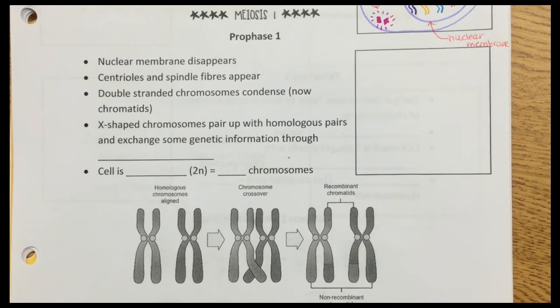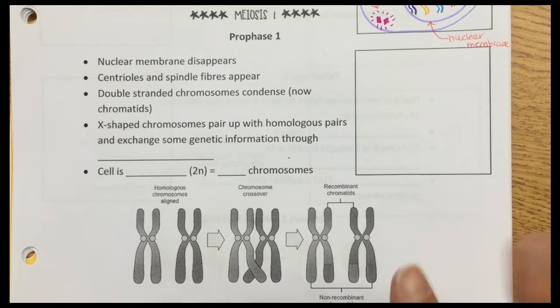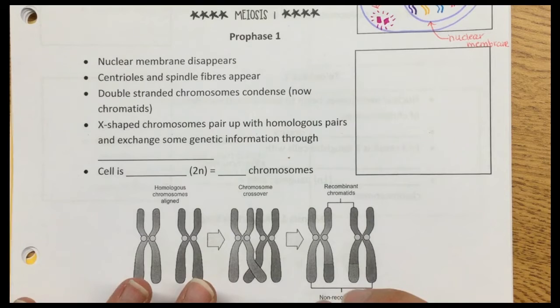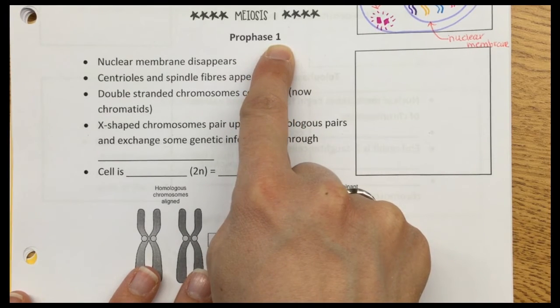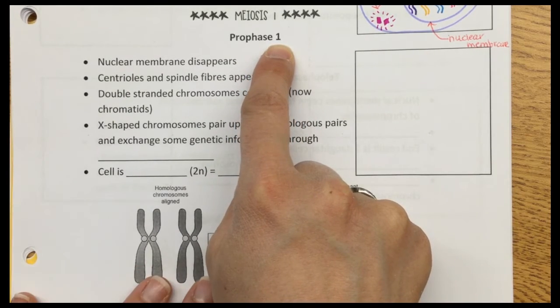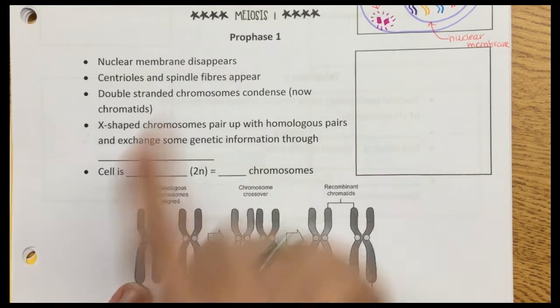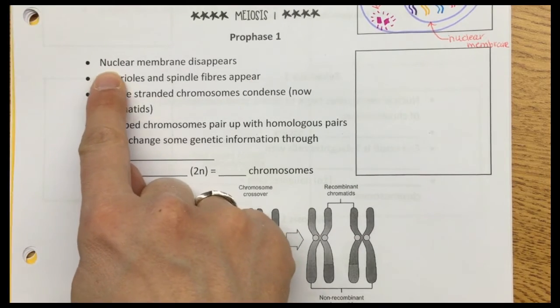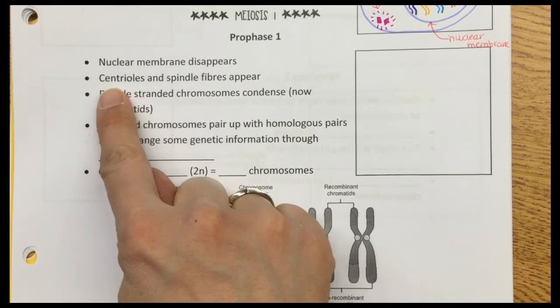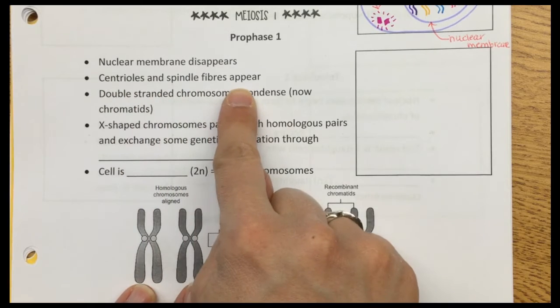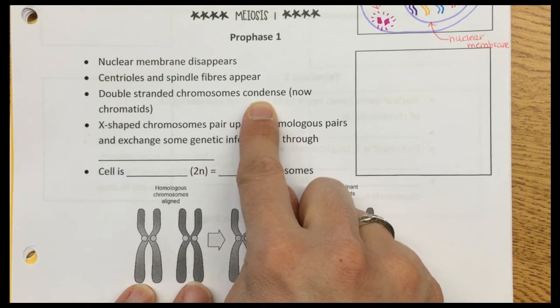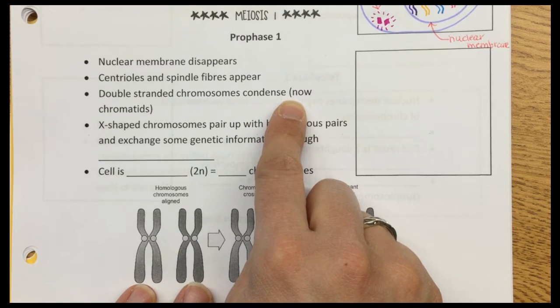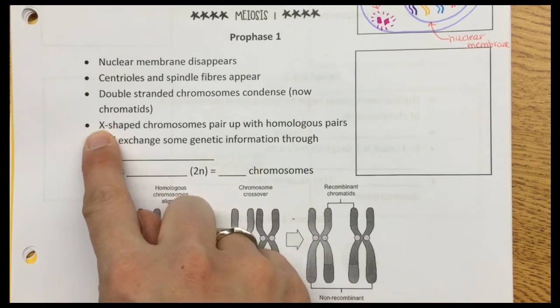Okay, let's start with meiosis 1. Meiosis 1 goes through PMAT just like mitosis, but now we label it prophase 1 because we're going to do PMAT twice. In prophase 1, our nuclear membrane disappears, our centrioles and spindle fibers appear, and our double-stranded chromosomes condense. They're now called chromatids.